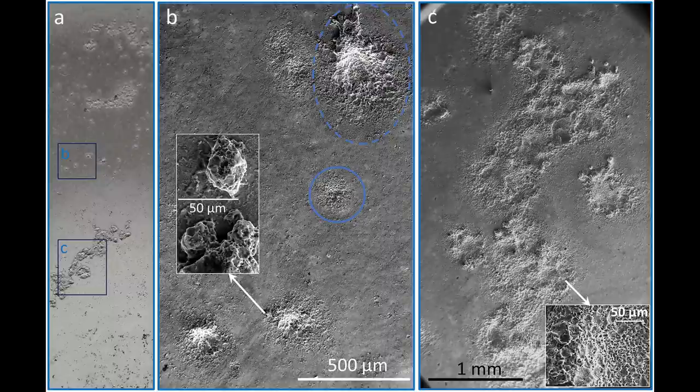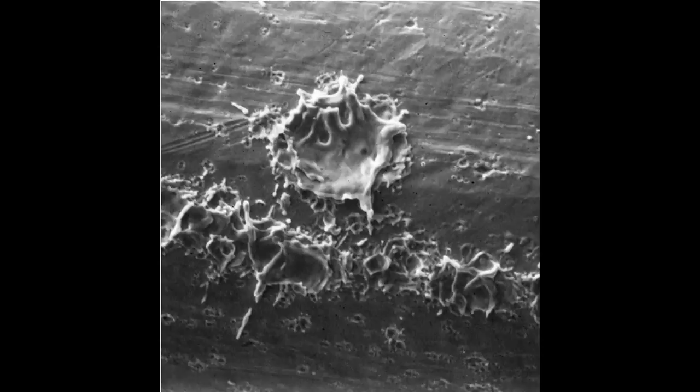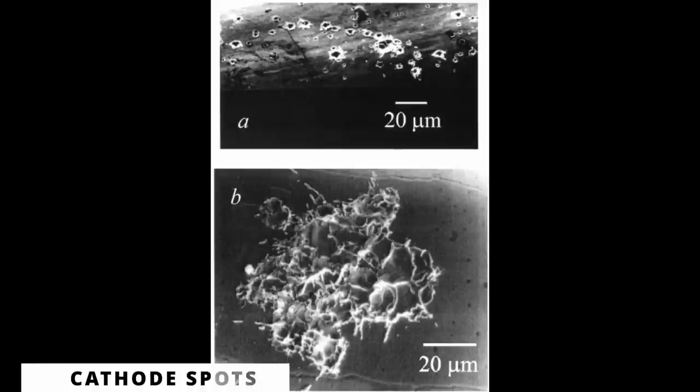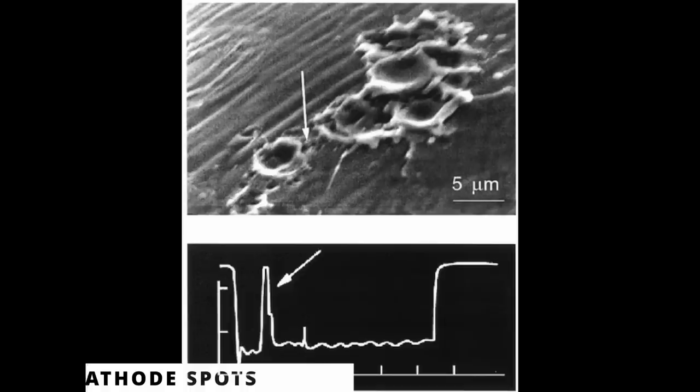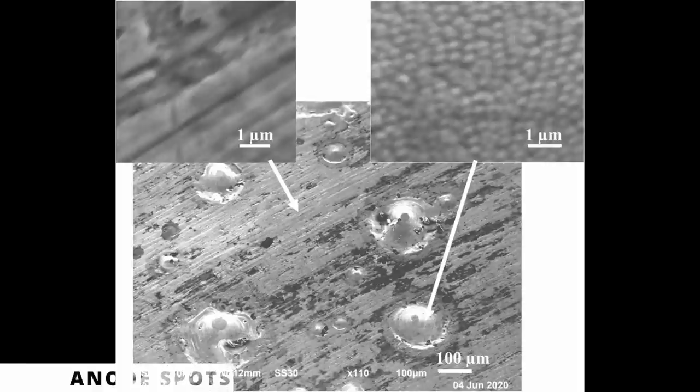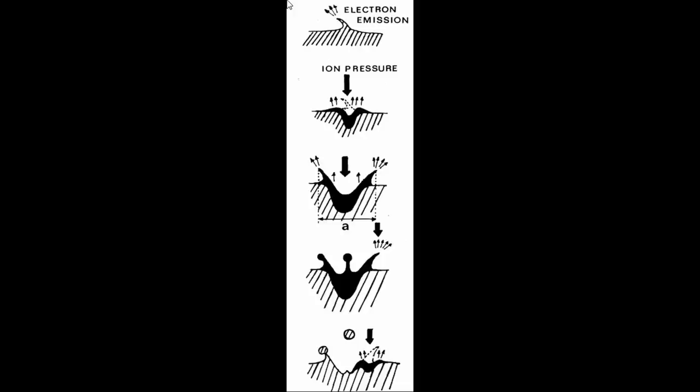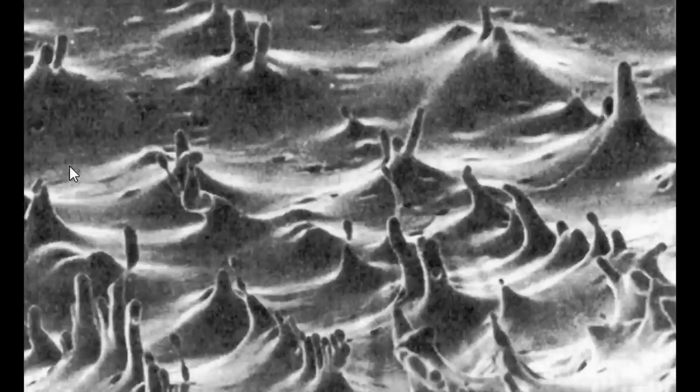When we examine the cathode spotting we can see many comparisons to scarring we see on the Moon, Mars and other bodies. But what exactly is the difference between anode spots and cathode spots? How are they created and what effects do they leave behind?